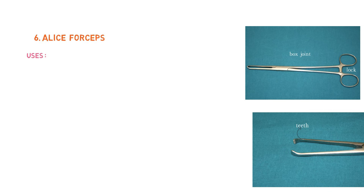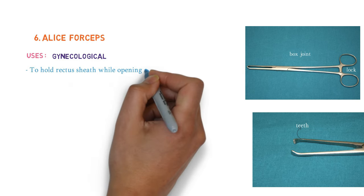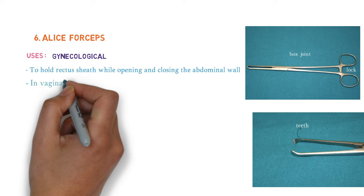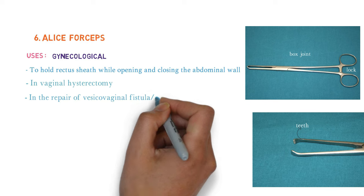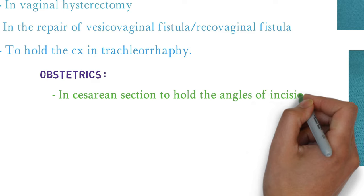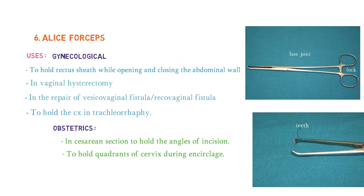The uses of Allis forceps are divided into gynecological and obstetric. Gynecologically, it is used to hold the rectus sheath while opening and closing the abdominal wall, to hold the angle of the rectus sheath in vaginal hysterectomy, in repair of vesicovaginal or rectovaginal fistula, and to hold the cervix in trachelorrhaphy. Obstetric uses include: in caesarean section to hold the angle of incision, and to hold the quadrants of the cervix during cerclage.